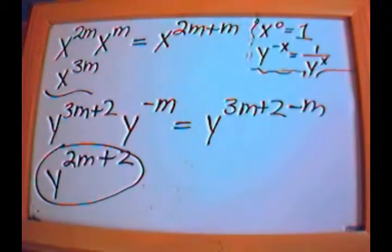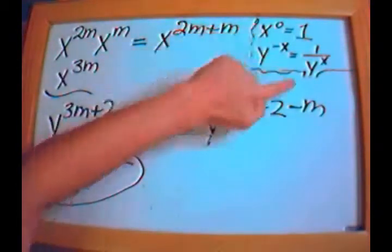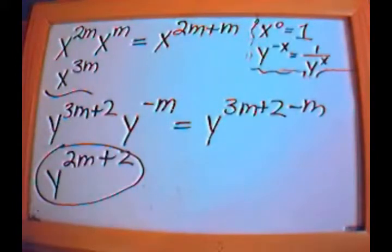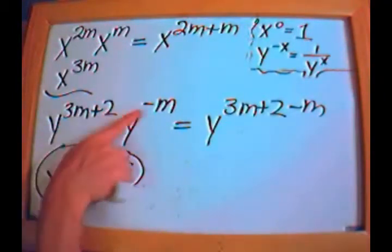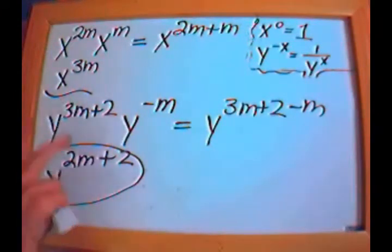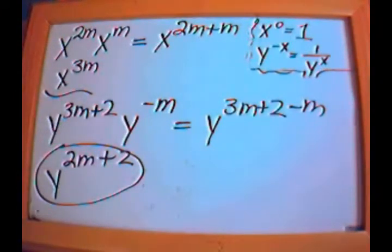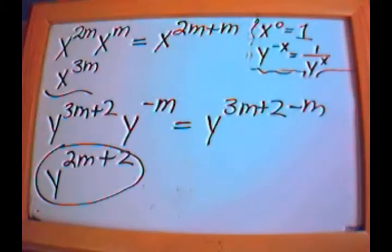That covers this section. The whole lesson centers on two key rules: when exponents with the same base are multiplied, you add them; when dividing, you subtract them. These skills will be used throughout the rest of the course, so they'll become second nature. That wraps up zero and negative integral exponents.